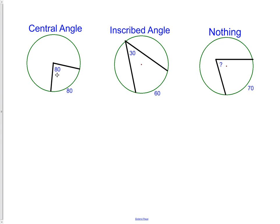Let's look at the angle relationships. When it's a central angle, the arc and the central angle have the same measurement. When it's inscribed angle, the arc and the inscribed angle have a relationship where this angle is one half of the arc. So the inscribed angle is one half of the arc. When it's a nothing, we have no idea.